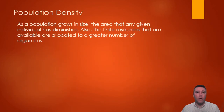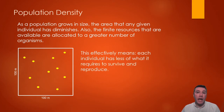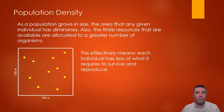As a population grows, the area or physical space that any given individual has available to it also decreases. This inverse relationship also applies to the food and water resources available to an individual. In this one-hectare plot of land where five individuals reside, each individual has one-fifth of whatever resources are present. But if the population increases in size, as does population density, because resource availability does not increase along with population growth, each individual in this larger population now only has one-tenth of whatever resources are present. Each individual now has less of what it needs in order to survive and potentially reproduce.